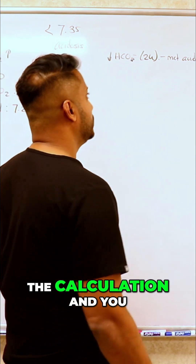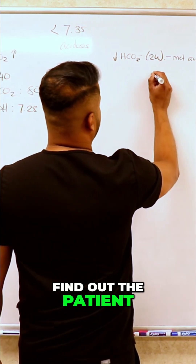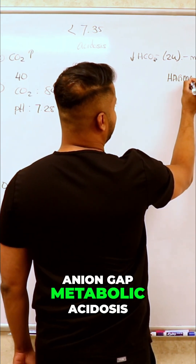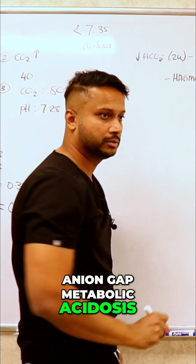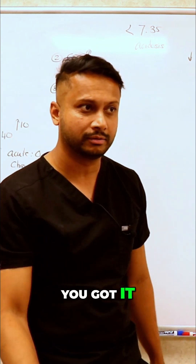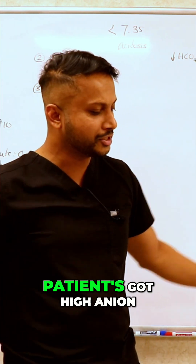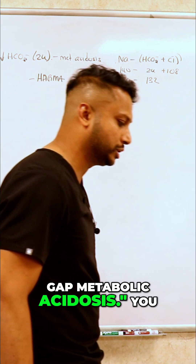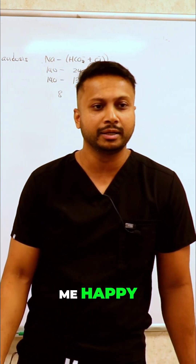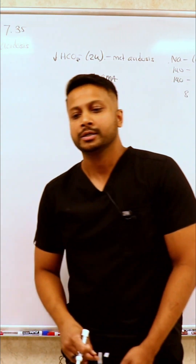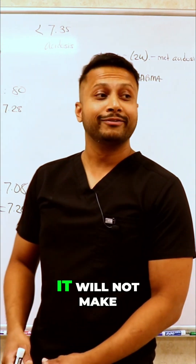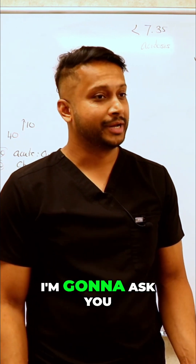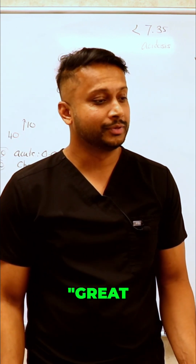Say you did the calculation and you find out the patient has a high anion gap metabolic acidosis. You figured it out — you say, 'Hey, the patient's got high anion gap metabolic acidosis.' You think that's going to make me happy? Actually, no, it will not make me happy. I'm going to ask you: great, what's the next step?